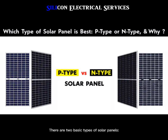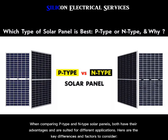There are two basic types of solar panels: P-Type (positive) and N-Type (negative). When comparing P-Type and N-Type solar panels, both have their advantages and are suited for different applications. Here are the key differences and factors to consider.